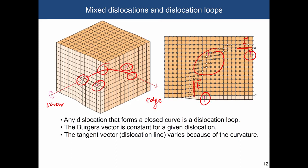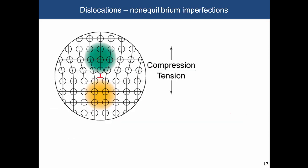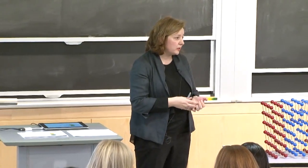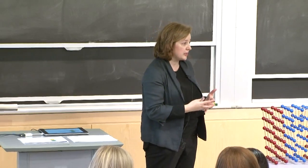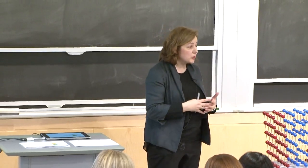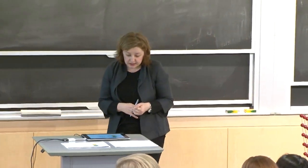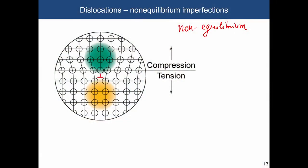Why do we care about the Burgers vector and the dislocation line? Dislocations are non-equilibrium defects because they store elastic energy. When you deform a material, part of that elastic energy is preserved in the form of dislocations — it can be up to 5% of the elastic energy. Around the dislocation core, everything above will be in compression (atoms closer together than their equilibrium position), and in tension beneath the dislocation.